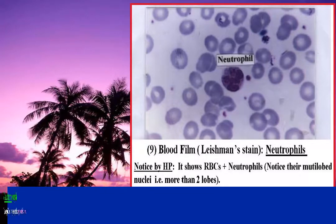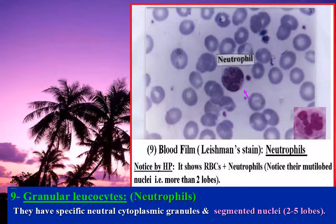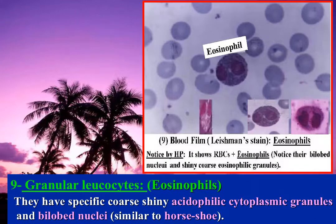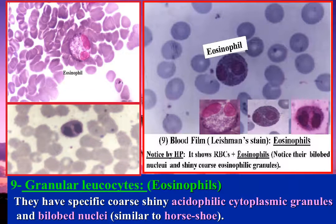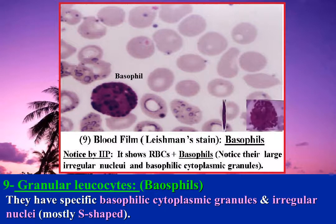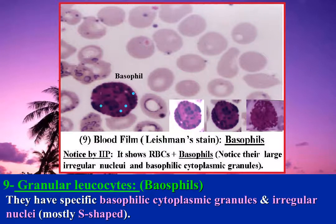Neutrophils, an example of granular leucocytes, have specific neutrophilic granules in the cytoplasm and large segmented or multi-lobed nuclei, each containing more than two lobes — from one to five loops. Eosinophils are another example of granular leucocytes, less numerous than neutrophils; they have specific shiny acidophilic cytoplasmic granules and large irregular nuclei, mostly S-shaped.